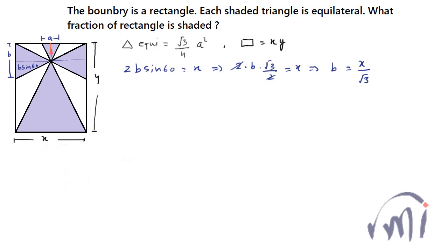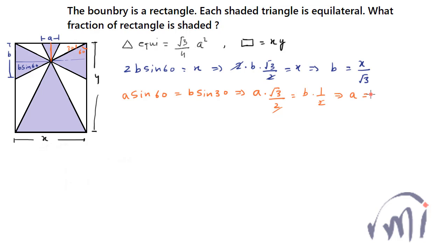If we talk about the height of this small triangle, it equals a·sin60. Since this angle is 60 degrees, the remaining angle is 30 degrees, so this height is also equal to b·sin30. That means a·(√3/2) = b·(1/2), or a = b/√3. Since b = x/√3, we get a = x/3.